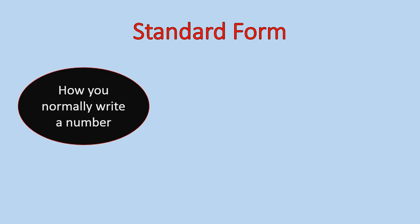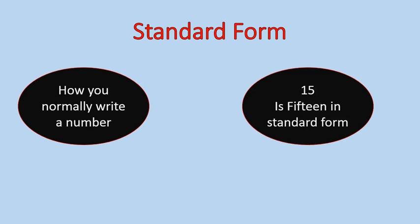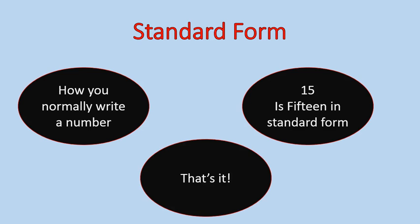Let's talk about standard form. Standard form is how you normally write a number. Here's an example: the number 15 is 15 in standard form. In written form or word form, we would write it out — fifteen. But in standard form, we would write the numbers 1, 5. That's what standard form is.